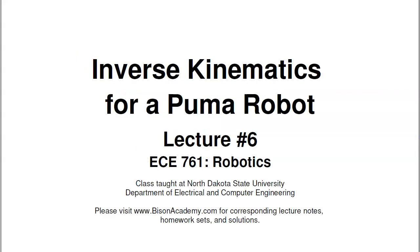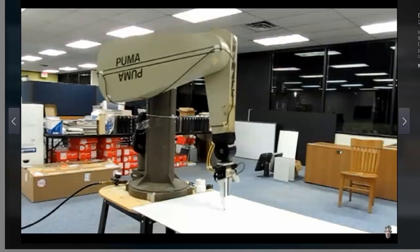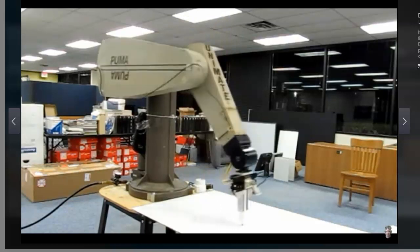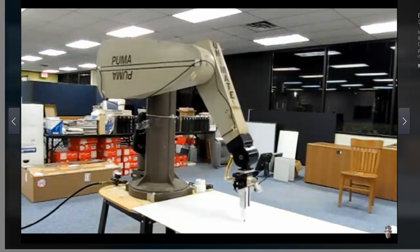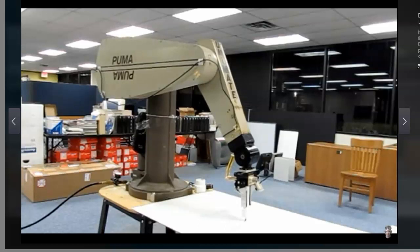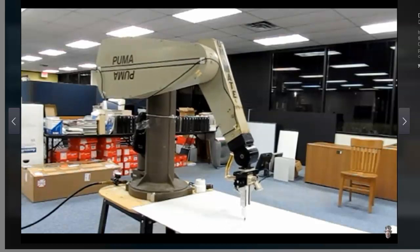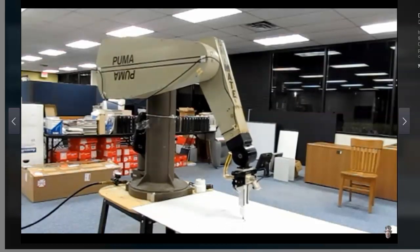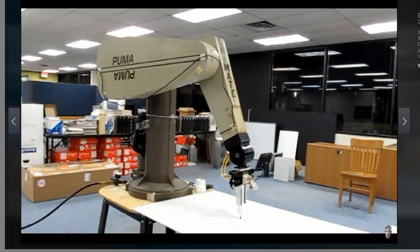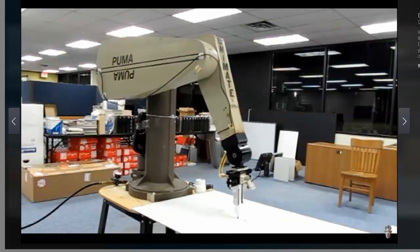Welcome to lecture number six for ECE 761 Robotics, Inverse Kinematics of a Puma Robot. Now this is what a Puma Robot looks like. It's a robot built by Unimation back in 1978. There have been quite a few variations since then. Still used as basically a teaching-type robot with three rotational joints.